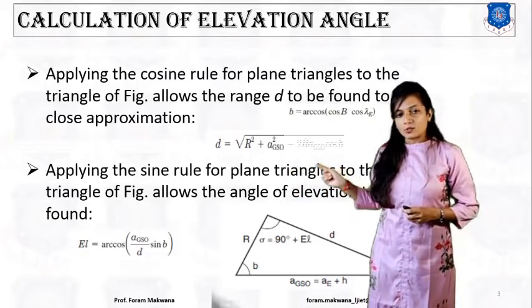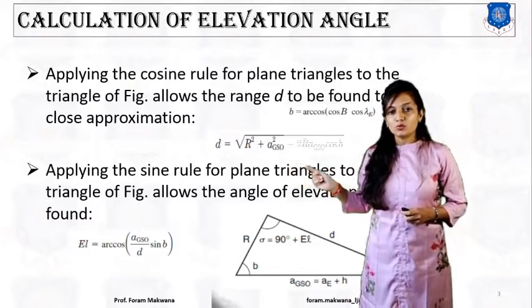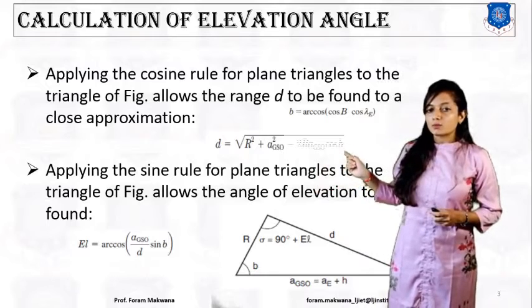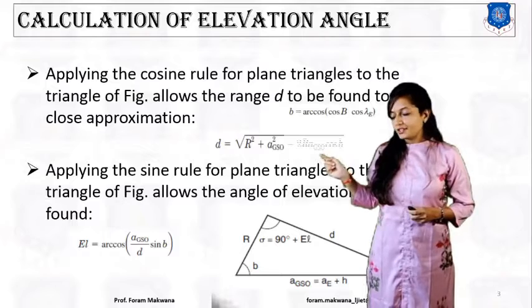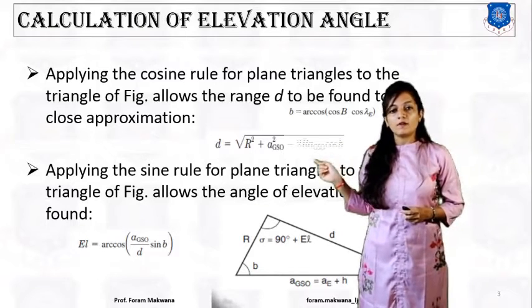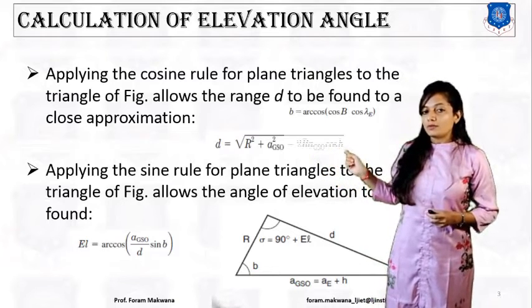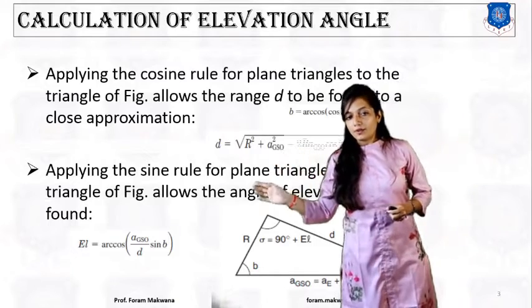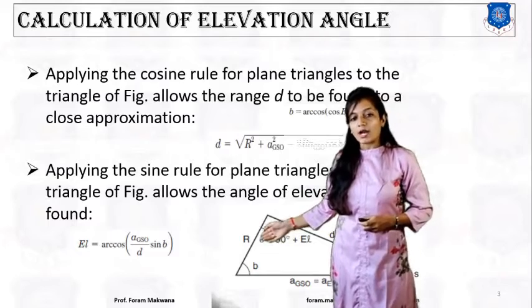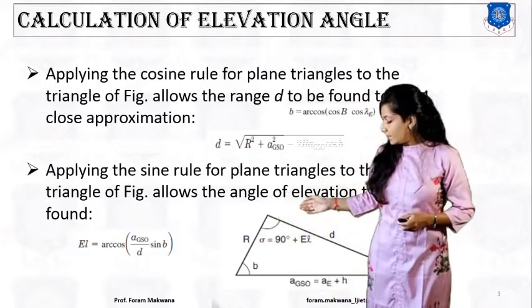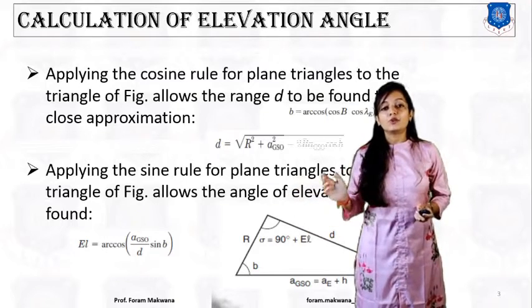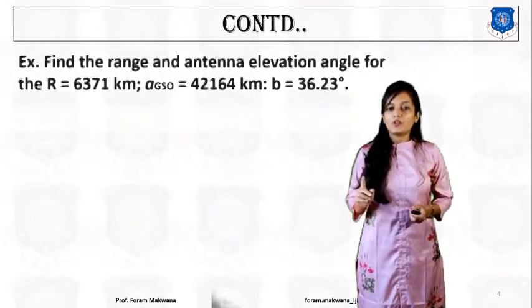Small d equals the square root of R squared plus A_GSO squared minus 2·A_GSO·R·cos(b). If we apply the sine rule for the plane triangle, we are able to calculate the angle of elevation. The angle of elevation is arc cos of A_GSO over d, multiplied by sin(b). We can replace small v with the latitude of the earth station if the value of small v is not given.